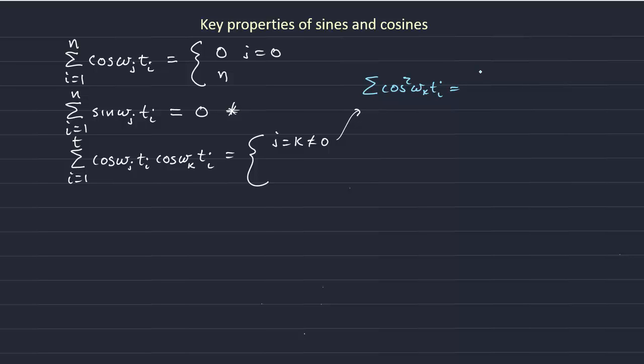Using a trig identity, that is equal to 1 plus 2 cosine omega k t i over 2.